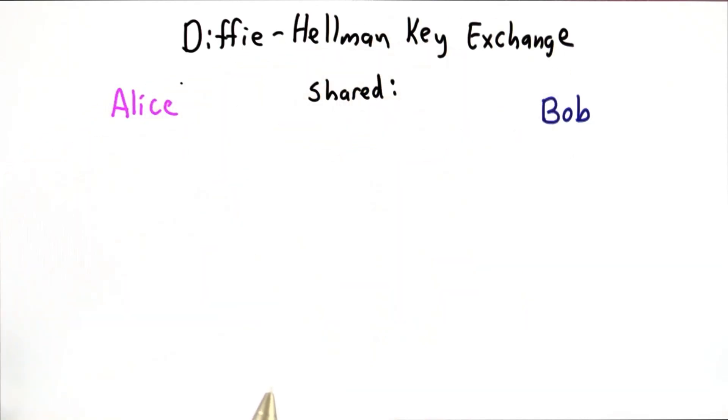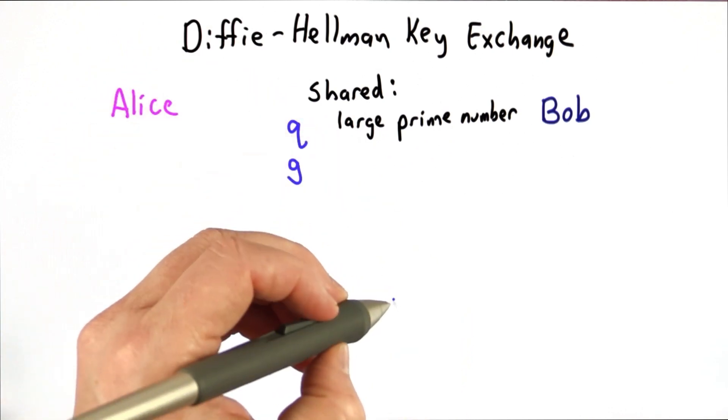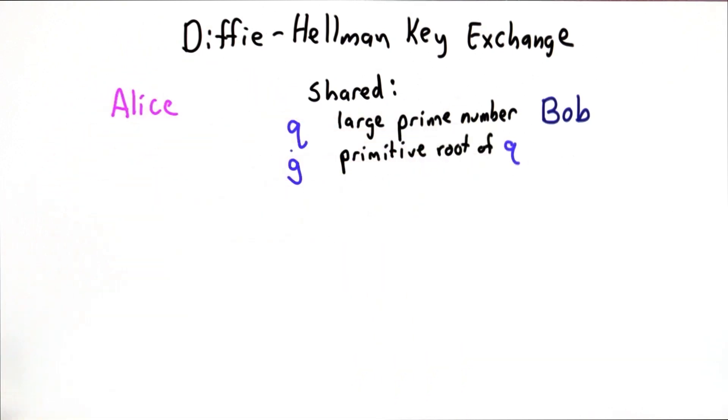So here's the idea of the protocol. First, they agree on two shared values. The first is q, some large prime number, and the second is g, and g is a primitive root of q.